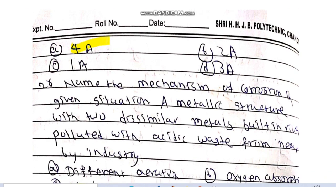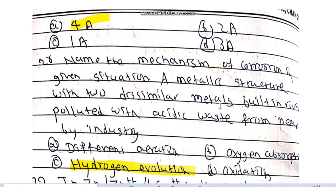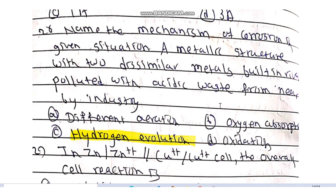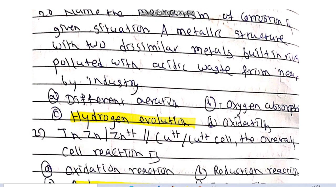Name the mechanism of corrosion in the given situation: a metallic structure with two dissimilar metals built in a river polluted with acidic waste from nearby industry. The mechanism is hydrogen evolution because acidic waste is present, therefore there is evolution of hydrogen gas in this reaction.